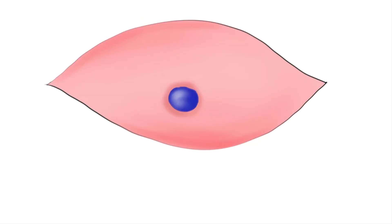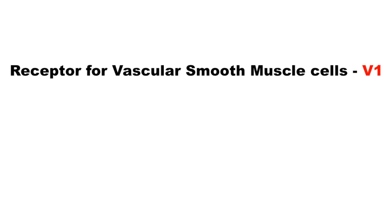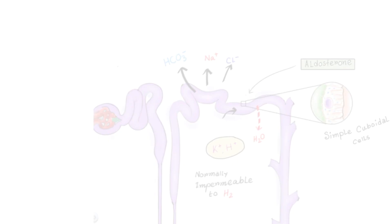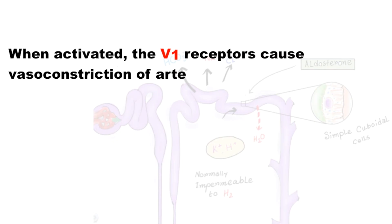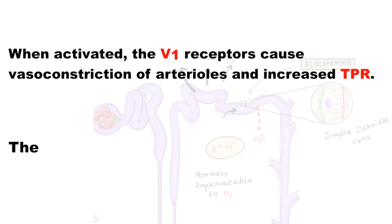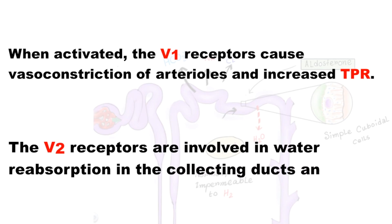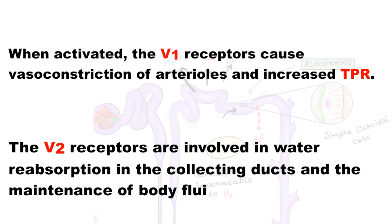Now let's see how ADH works as a vasoconstrictor. ADH works on both renal epithelium and vascular smooth muscles; however, the receptors are different. The receptor present on the vascular smooth muscle is V1 receptor, and the receptor present on the renal epithelium is V2 receptor. If V1 receptor is activated, it can cause vasoconstriction of arterioles and increase total peripheral resistance. The V2 receptors are involved in water reabsorption in the collecting ducts and maintenance of body fluid osmolarity.